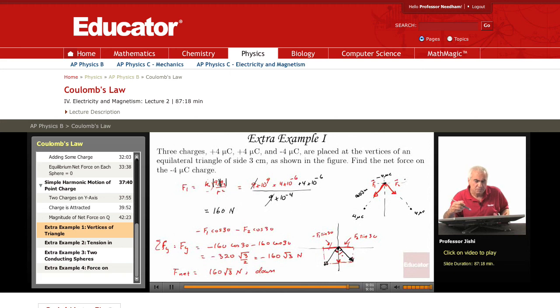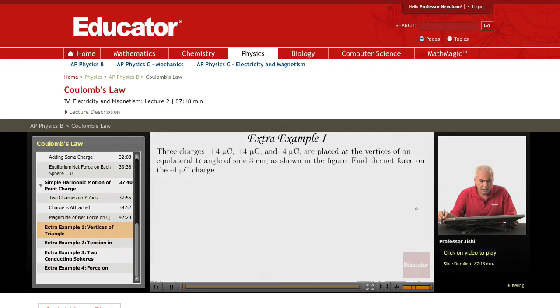All right, so this is a really simple example. All you need to do is use Coulomb's Law to find the magnitude of the forces, and then keep in mind that forces are vectors, so you must add them like vectors. Once you get the magnitudes and you know the directions of the forces, it just becomes a problem of vector addition.